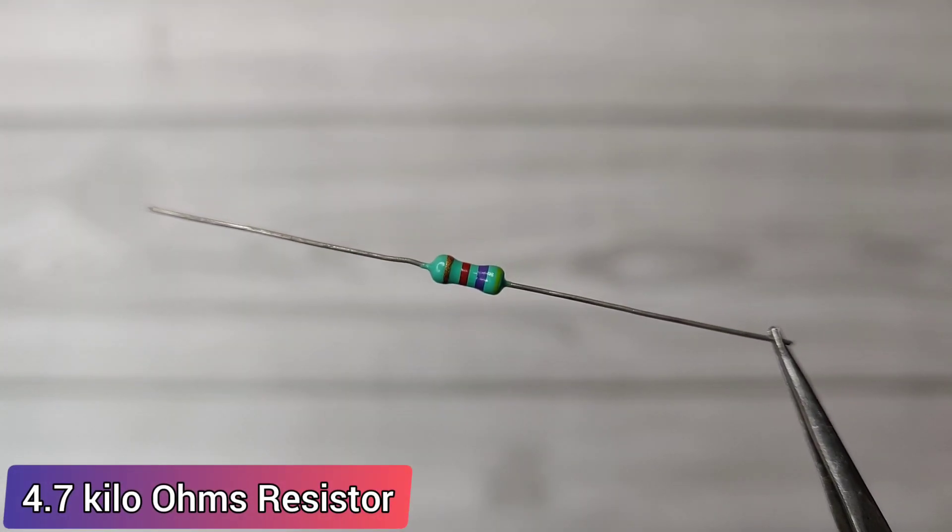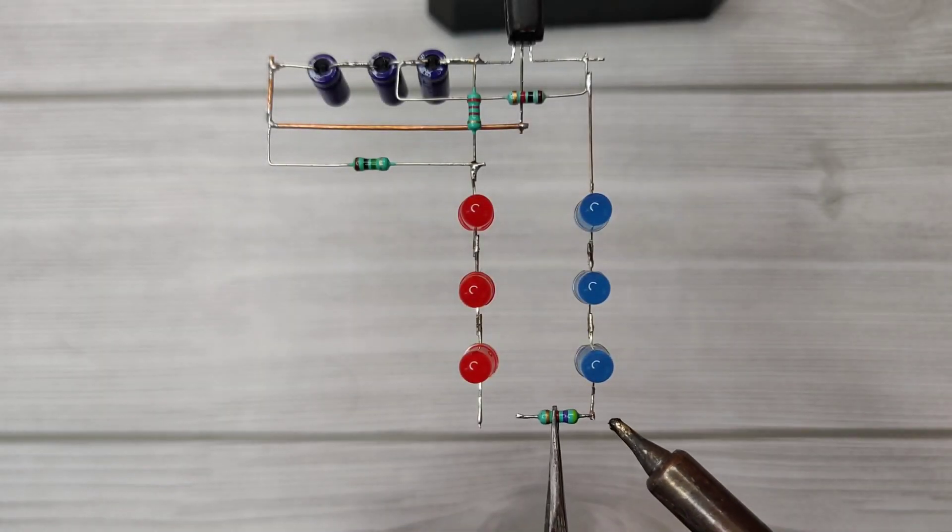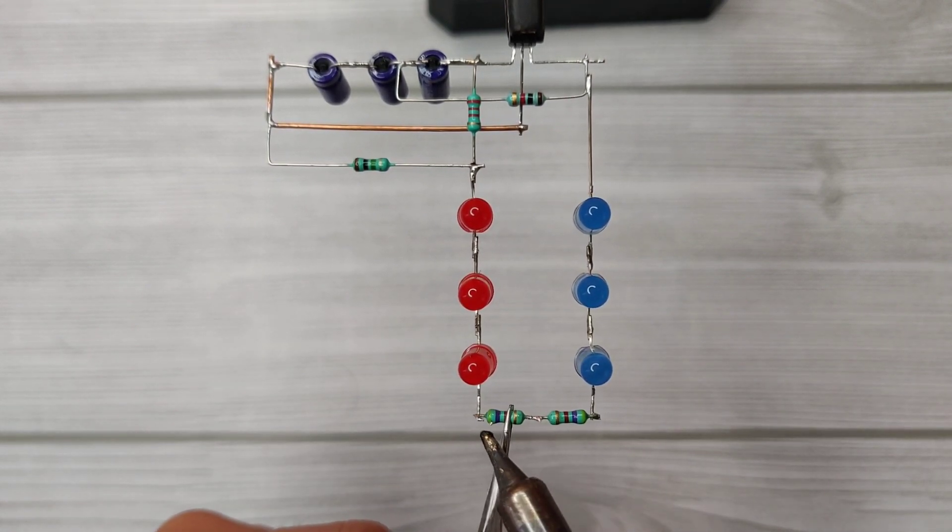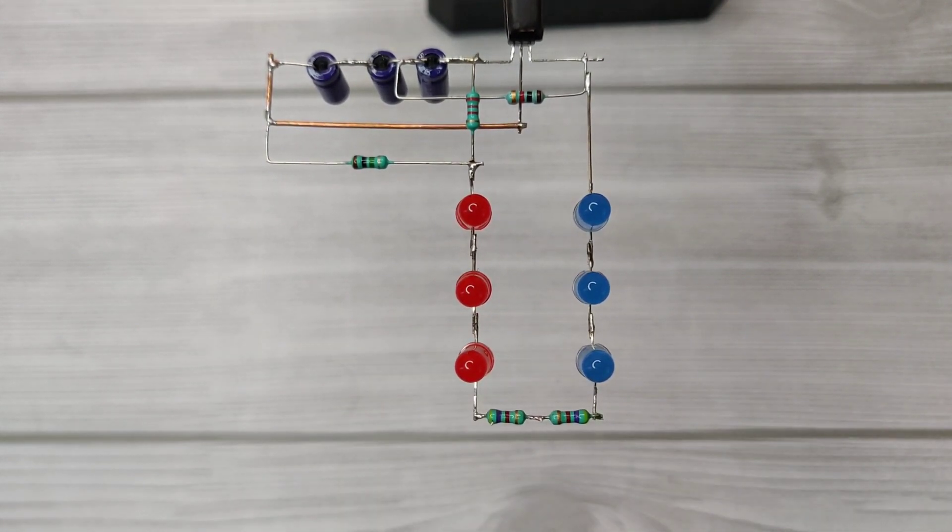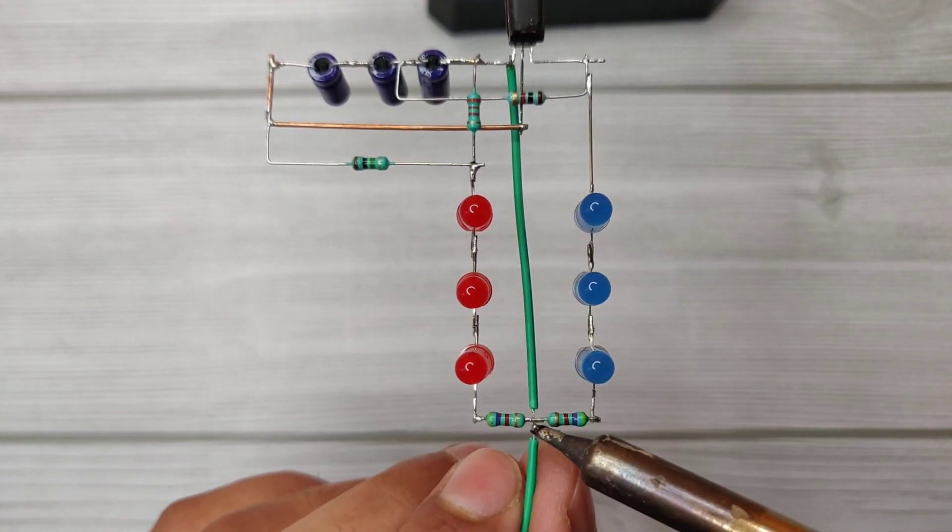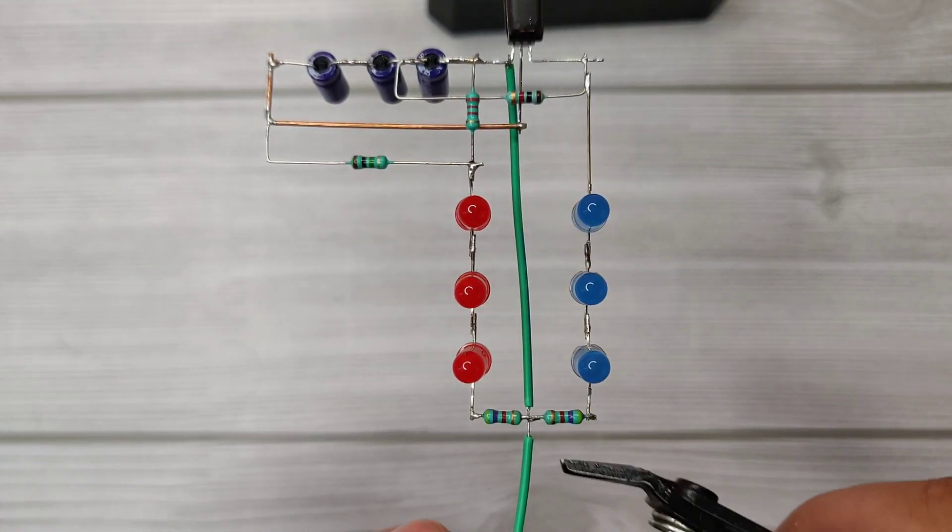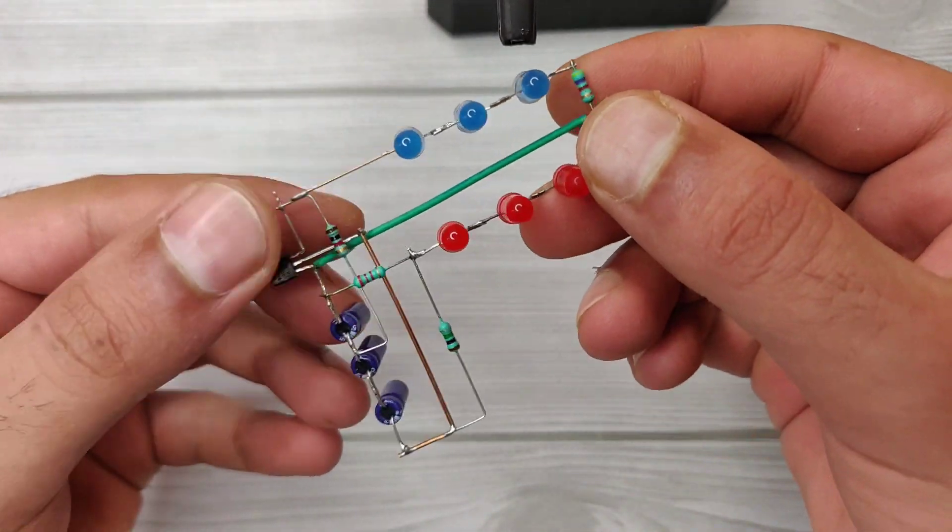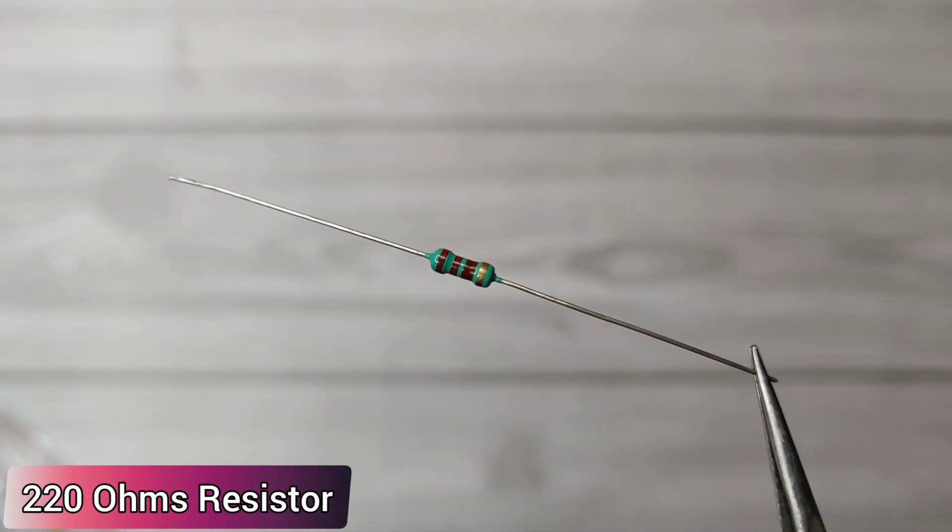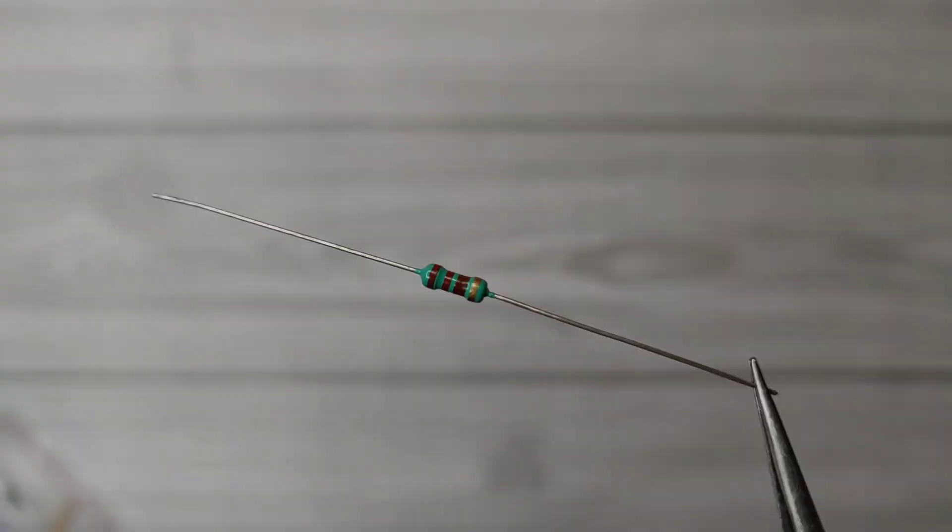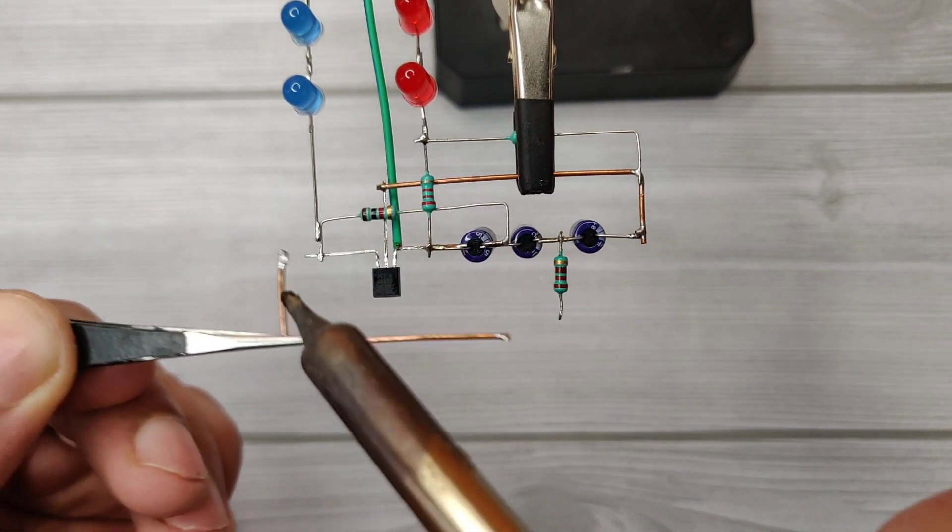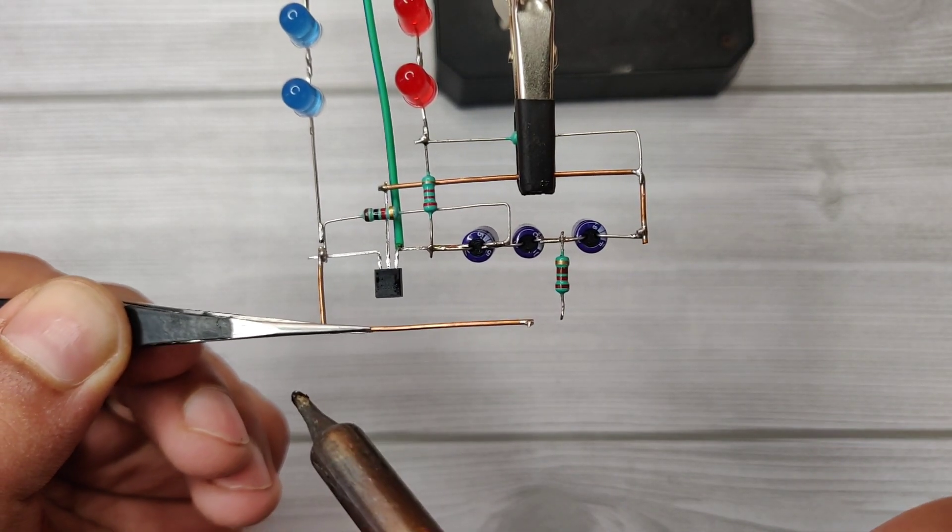Take 4.3 kilo ohm resistors. Solder one on the series of blue LEDs and another 4.3k ohm resistor on the series of red LEDs. Connect a jumper wire between the collector of the transistor and the middle of both 4.7k resistors.